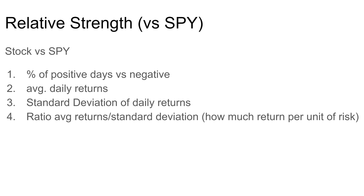Lastly, we're going to compare the ratio of average returns divided by the standard deviation, which gives us a measure of how much return we earned per unit of risk. You want more returns for less variability, so the higher this ratio the better. Let's exit this and go to the stock screener.